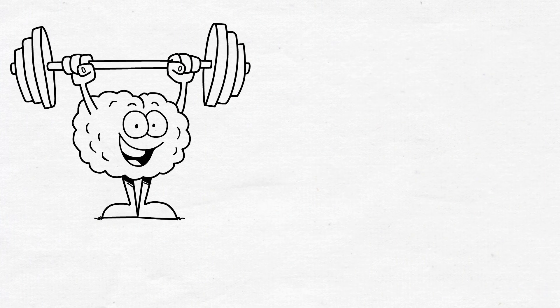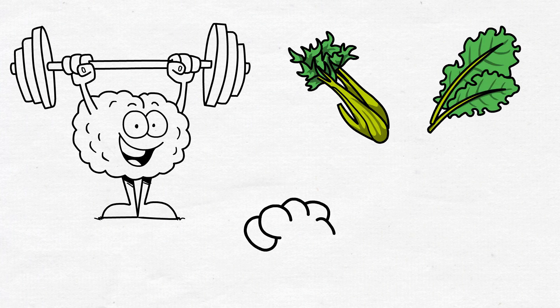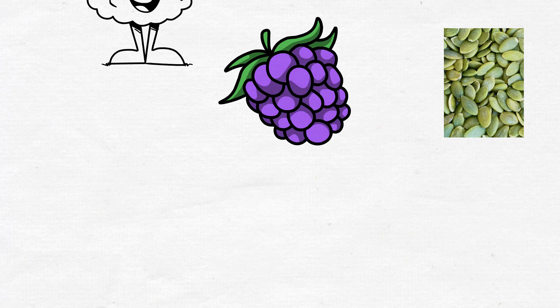The healthiest nutrients for the brain include dark leafy greens, berries, pumpkin seeds, etc.